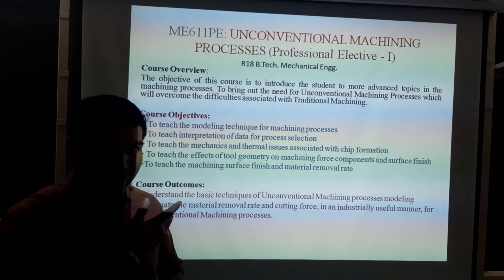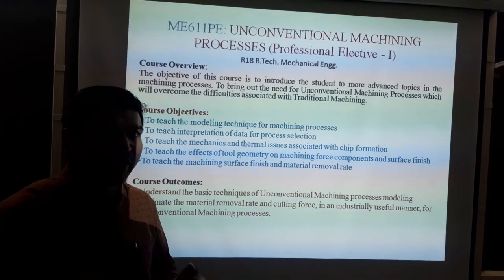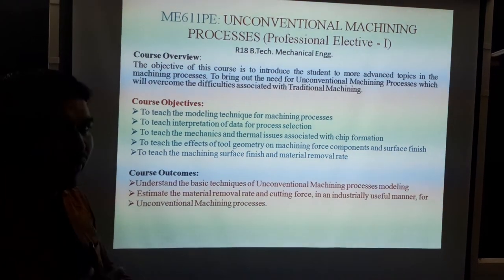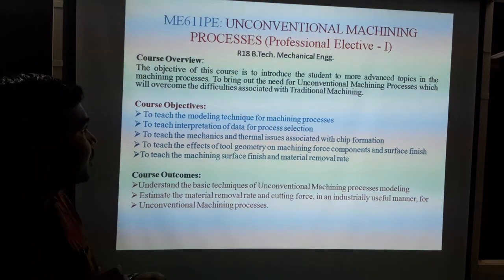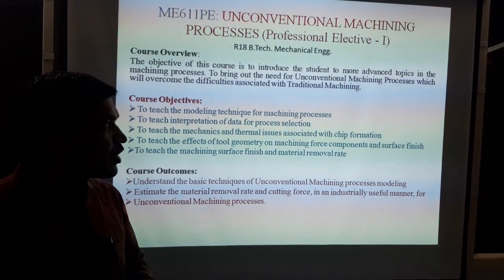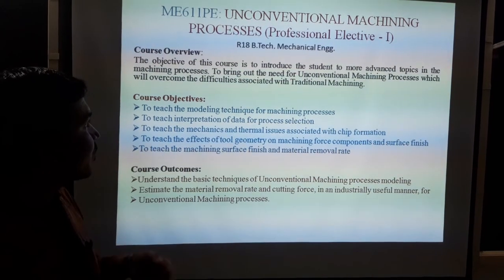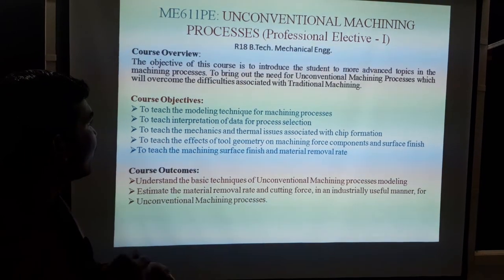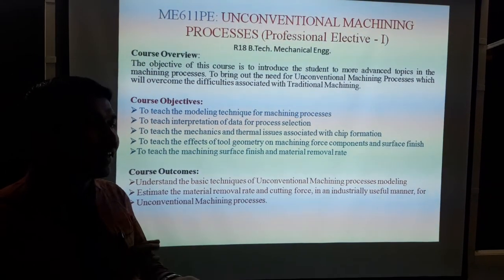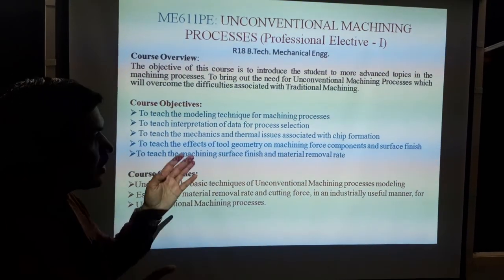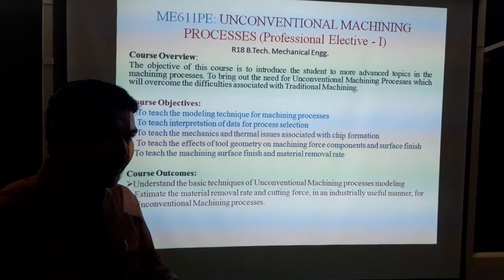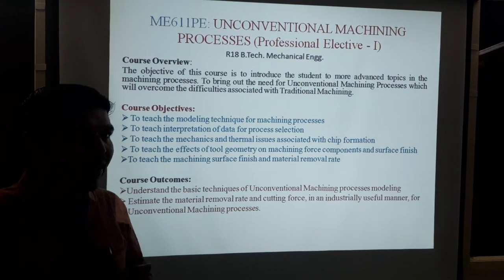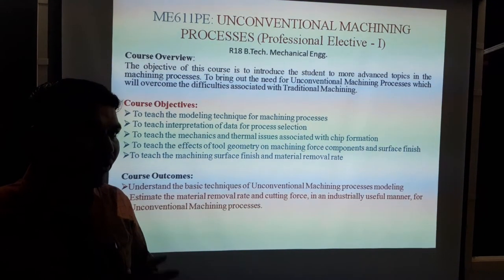First, let's look at the subject overview. We are displaying and understanding the course outcomes in this slide. See here - course overview. The course has two objectives: first, to introduce students to more advanced topics in Machining Process. Second, the need for unconventional processing to overcome difficulties associated with traditional Machining Processing. In this subject we are learning about techniques, fundamentals, and the following processes. The subject overview has 5 points.